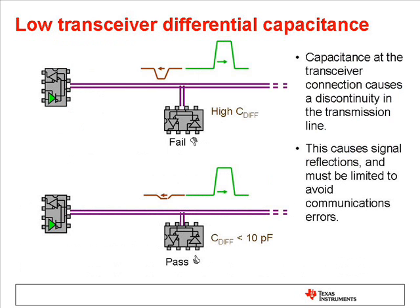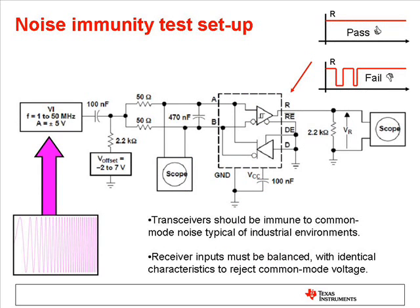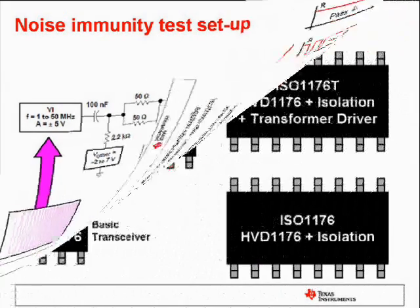The differential capacitance of a PROFIBUS transceiver should be minimized, less than 10 pF, to reduce the discontinuity of the transmission line. The common mode noise immunity should be specified to reduce any effect from spurious electrical pulses in the network.